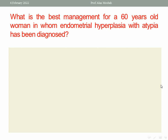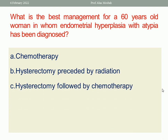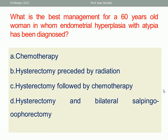What is the best management for a 60-year-old woman in whom atypical endometrial hyperplasia has been diagnosed? Options: chemotherapy, hysterectomy preceded by radiation, hysterectomy followed by chemotherapy, or hysterectomy and bilateral salpingo-oophorectomy? She is 60 years old with atypical endometrial hyperplasia, so she is at high risk for carcinoma. The best line of treatment is hysterectomy and bilateral salpingo-oophorectomy. We do not give chemotherapy or radiotherapy because there is no proven malignancy — it is just a precancerous lesion. Surgical treatment is enough.